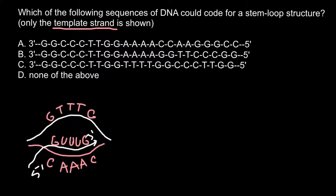The coding strand of DNA has the same prime ends as mRNA. So here we would have the 5' end and the 3' end. On the template strand of DNA we would have the 5' end on one side and the 3' end on the other side, because the two strands of DNA run in reverse directions (antiparallel).